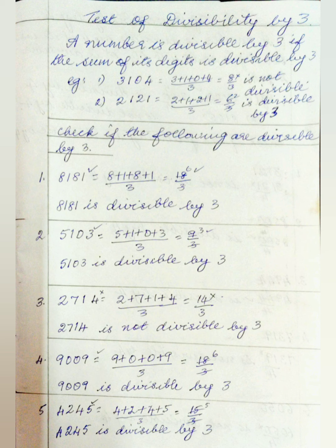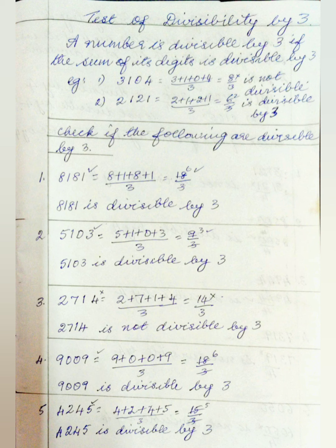Now let us check if the following are divisible by 3. 8181: 8+1+8+1 = 18, and 3 goes into 18 six times, so 8181 is divisible by 3. 5103: 5+1+0+3 = 9, and 3 goes into 9 three times, so 5103 is divisible by 3. 2714: 2+7+1+4 = 14, and 3 does not go into 14 exactly, so 2714 is not divisible by 3.